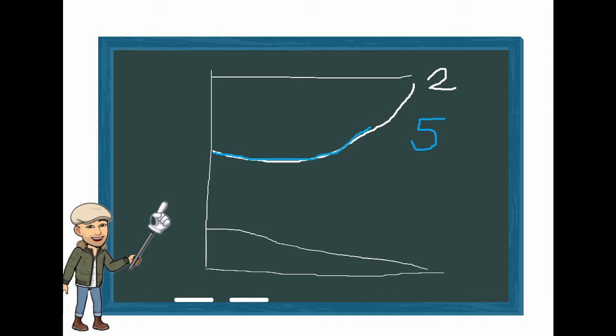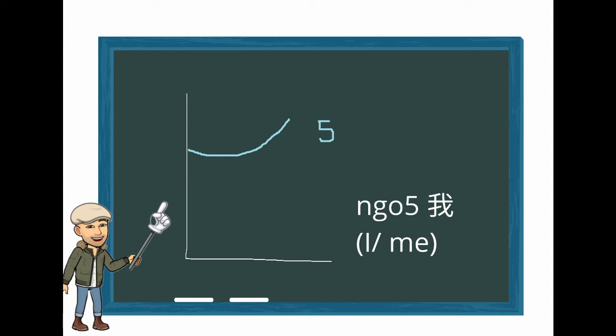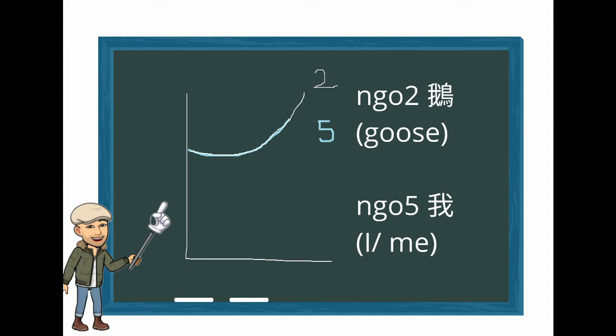If I use 'ngo' as an example — 'ngo' — I is 'ngoo' tone 5. If I were to do an 'ngo' tone 2, it would sound like this. 'Mo, mo' — that would be a tone 2, rising up all the way.